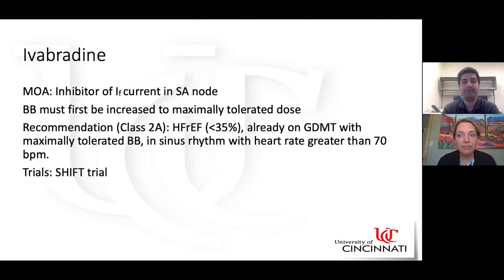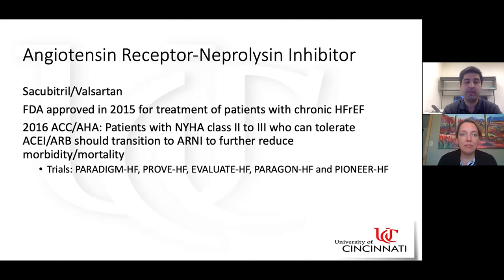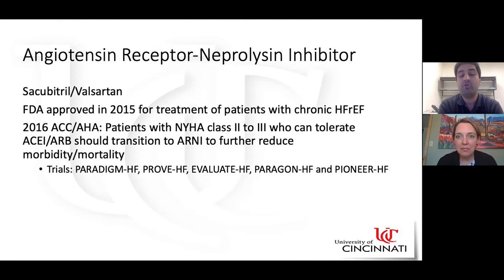The next category is ARNIs. The drug used is sacubitril/valsartan, also known as Entresto, approved by the FDA in 2015 for patients with chronic heart failure. It is indicated for ejection fraction less than 40% with NYHA class two to four. ARNIs are now preferred over ACE inhibitors and ARBs. The PARADIGM-HF trial showed ARNIs reduced cardiovascular death and heart failure hospitalization by 4.7% more compared to enalapril.